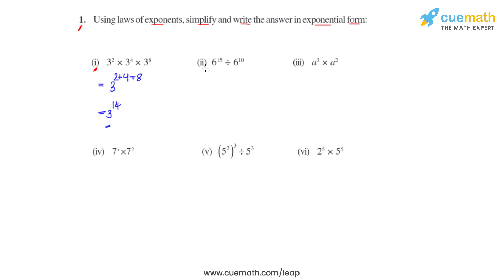In the second bit, we will be using the quotient law of exponents, as we see a division here. The bases are the same but powers are different. In the quotient law, we subtract the powers keeping the same base, so we write 6 raised to 15 minus 10, which gives us 6 raised to 5.